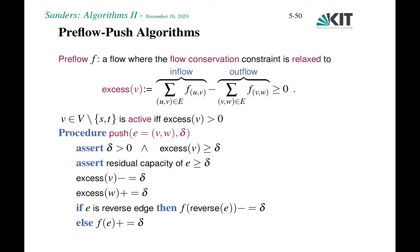The terms preflow and push have technical meanings. A preflow is a generalization of a flow where it's okay if a vertex has incoming flow larger than its outgoing flow, as long as we record it in the excess value of v. We allow violation of the flow conservation invariant during computation. The goal is to eventually reduce all excesses to zero — except at source and sink — at which point we have a proper flow. A vertex is active if it has positive excess.